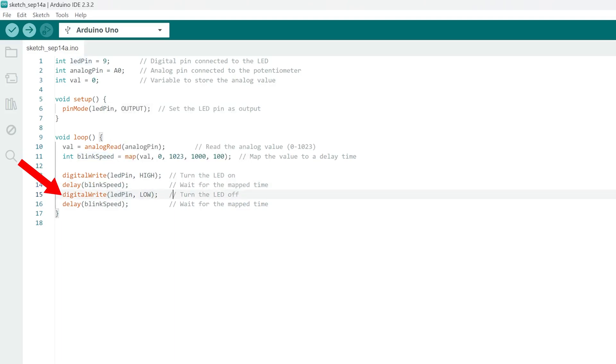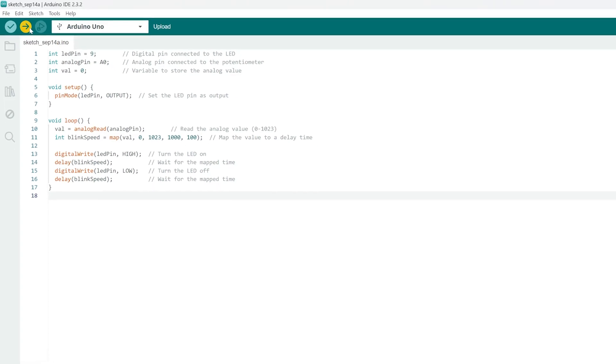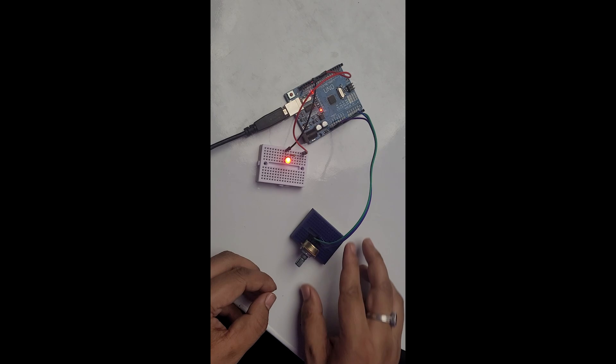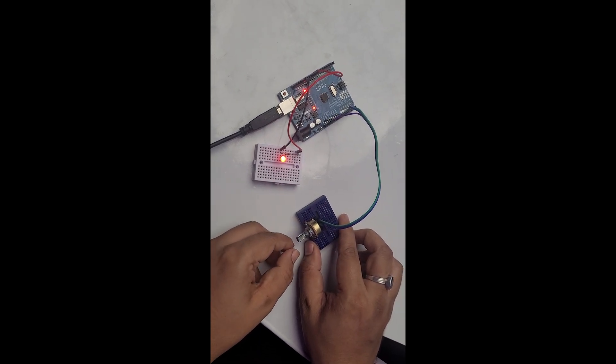So in this way we have written this code. The only thing here we need to do after connecting our Arduino board is to upload the code. And here we go. Here we can see we have compiled it successfully and we have uploaded it as well. And there we go, now our setup is ready.